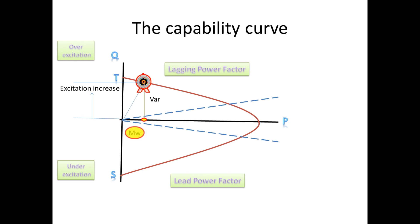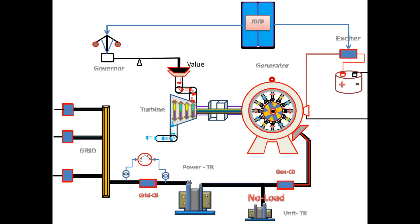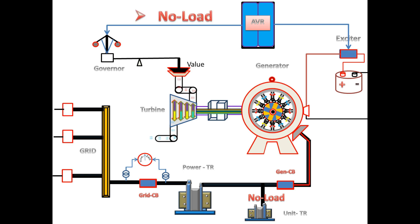Third: in some cases, if the generator runs in no load condition, even the house load is not utilized from the generator. In this condition, if the generator runs below no load loss, then from the point of running cost it is a loss only, so it is better to trip the generator. Now we go to the effect of low forward power.